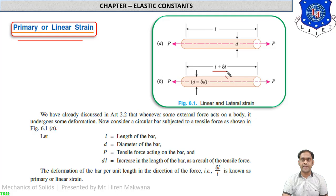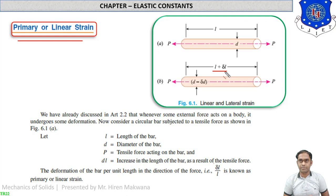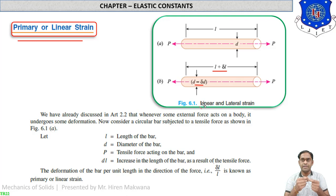When the length is increasing, the diameter has to decrease. The final diameter will be d minus delta-d. So length is increasing and diameter is decreasing. When force is applied along the direction of length and the length increases, this type of strain is known as primary or linear strain.